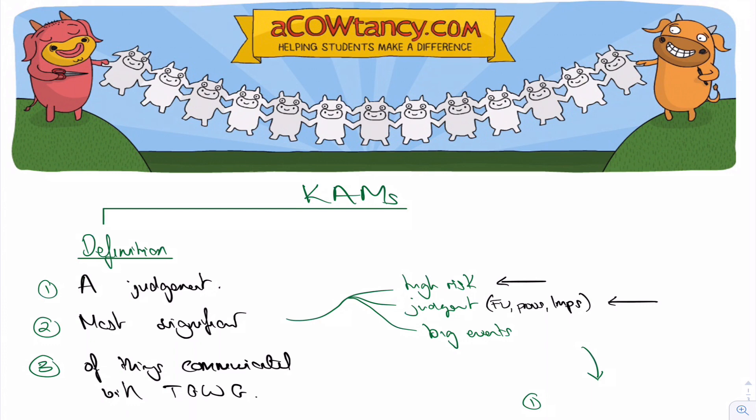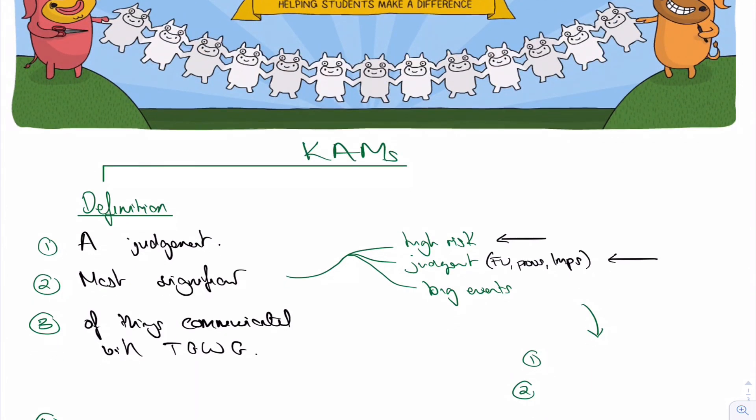Also, things like big events. So what sort of big events could happen? Acquisition of a subsidiary, for example. There could be big industry or regulation changes, and that will affect the riskiness and the management's opinion and all that sort of thing.